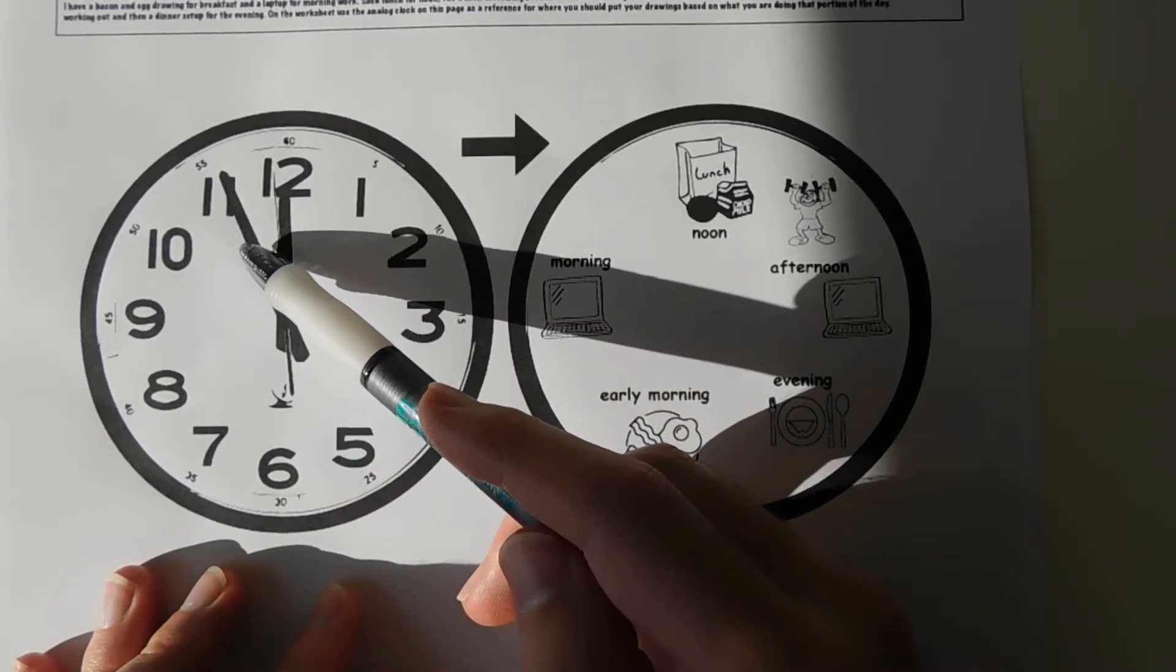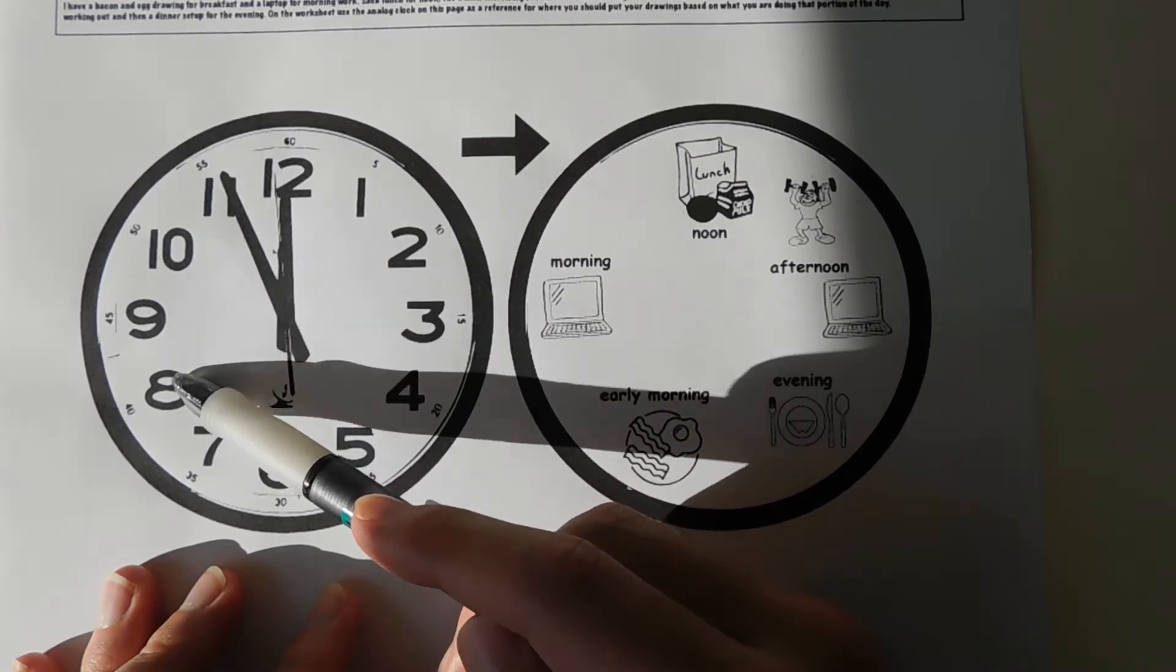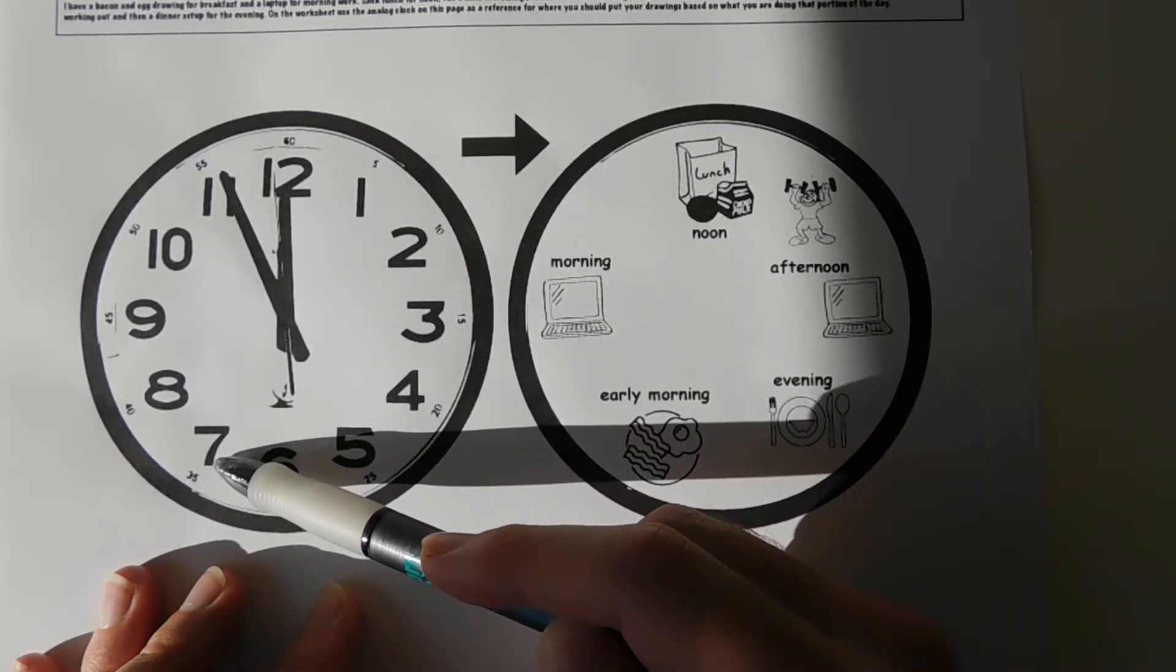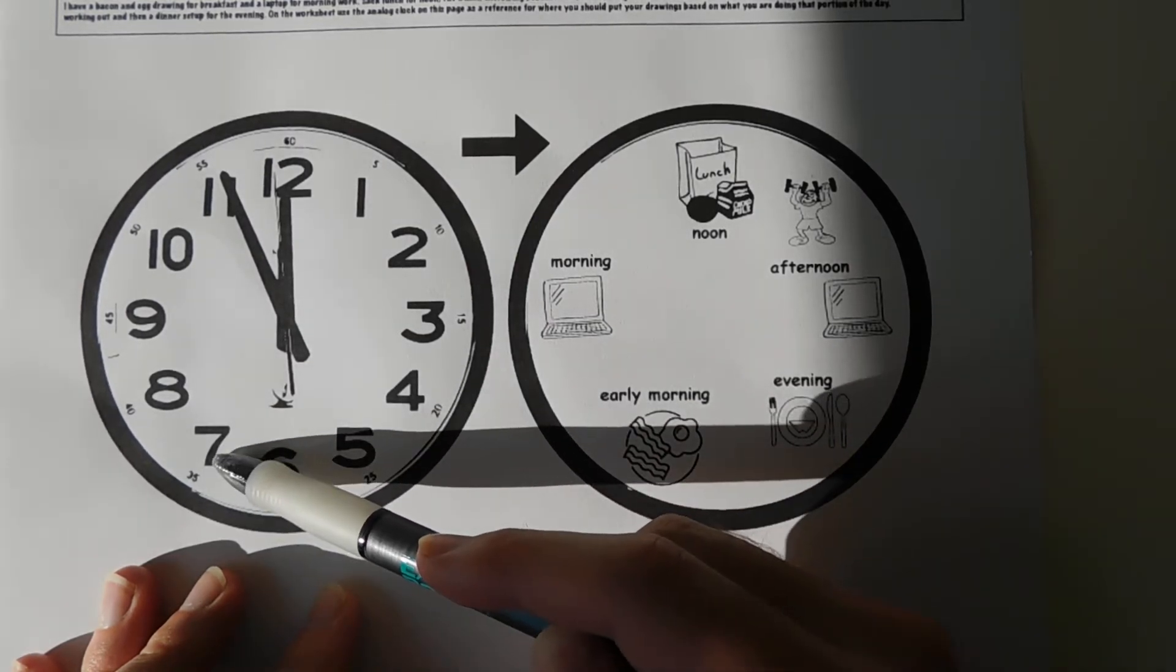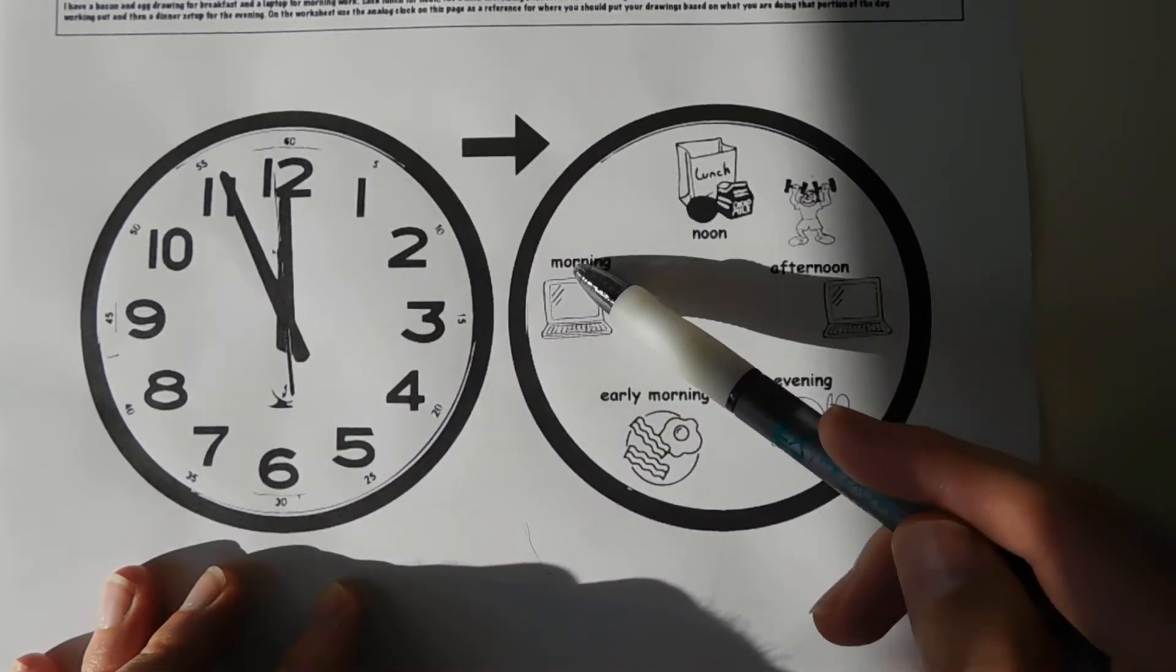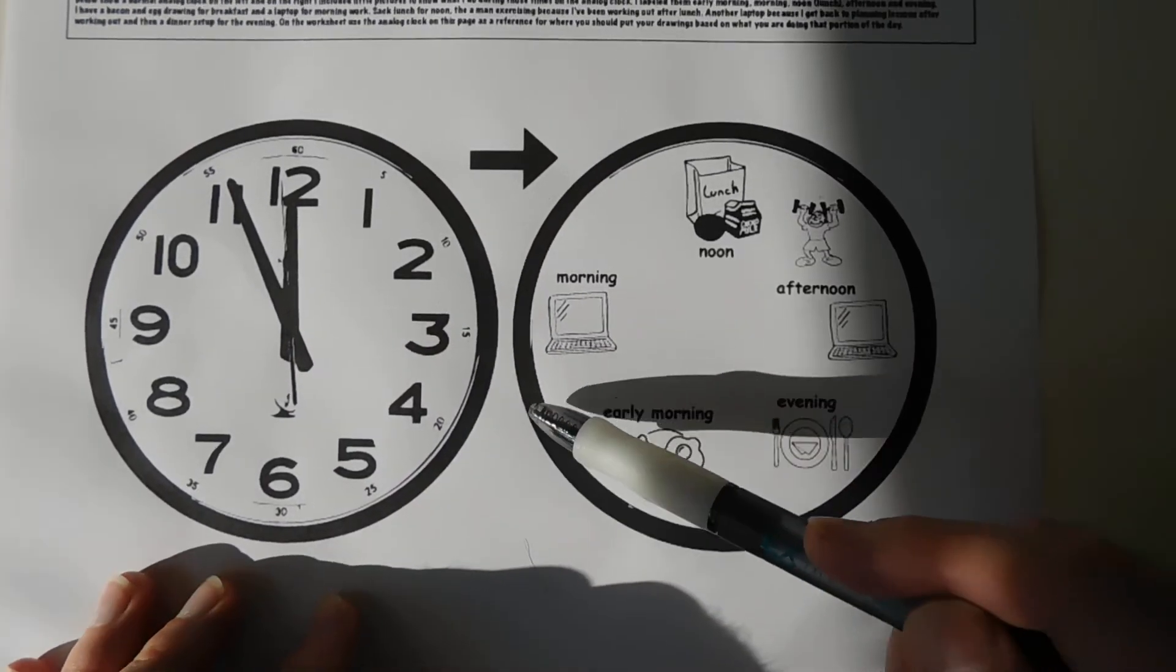9, 10, 11, right before lunch, I'm working. I start working at 7, actually I get up at about 6, so 7 to 11, in this window right here, I'm on my laptop working.